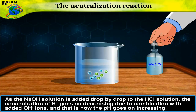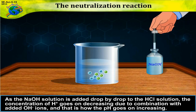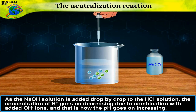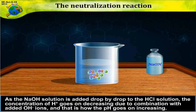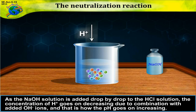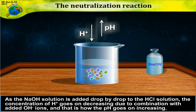As the NaOH solution is added drop by drop to the HCl solution, the concentration of H⁺ goes on decreasing due to the combination with added OH⁻ ions, and that is how the pH goes on increasing.